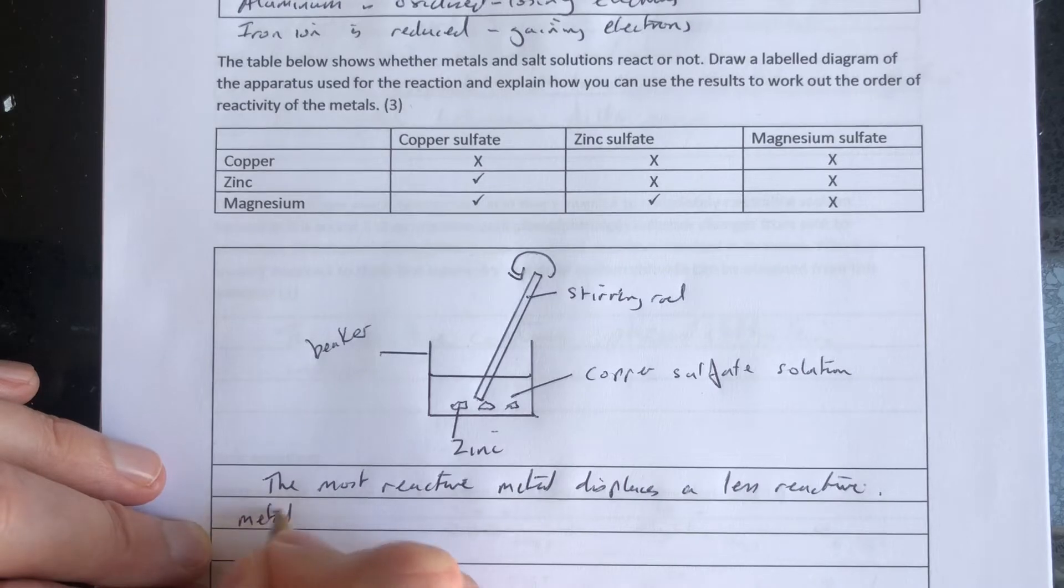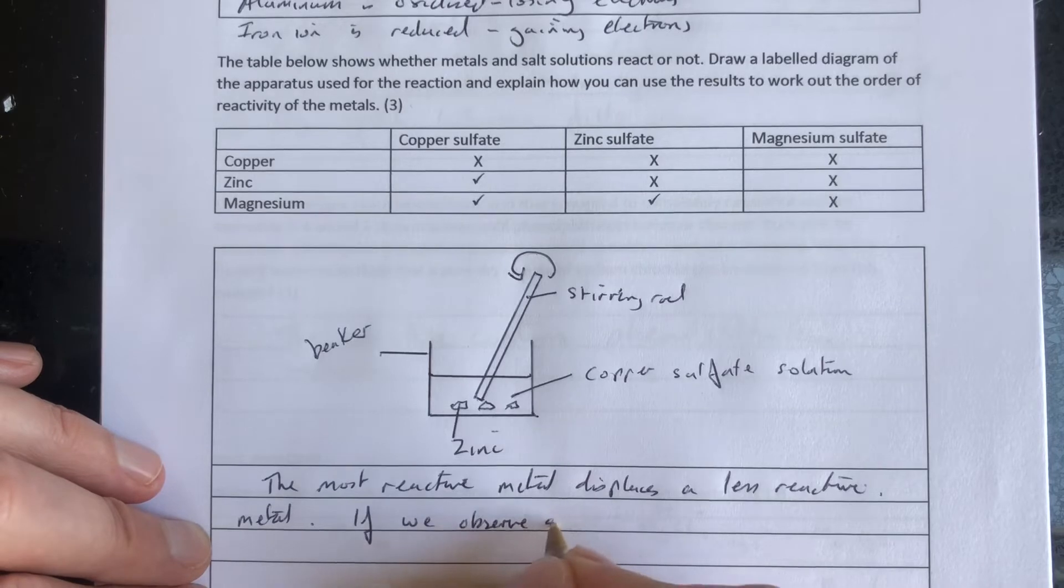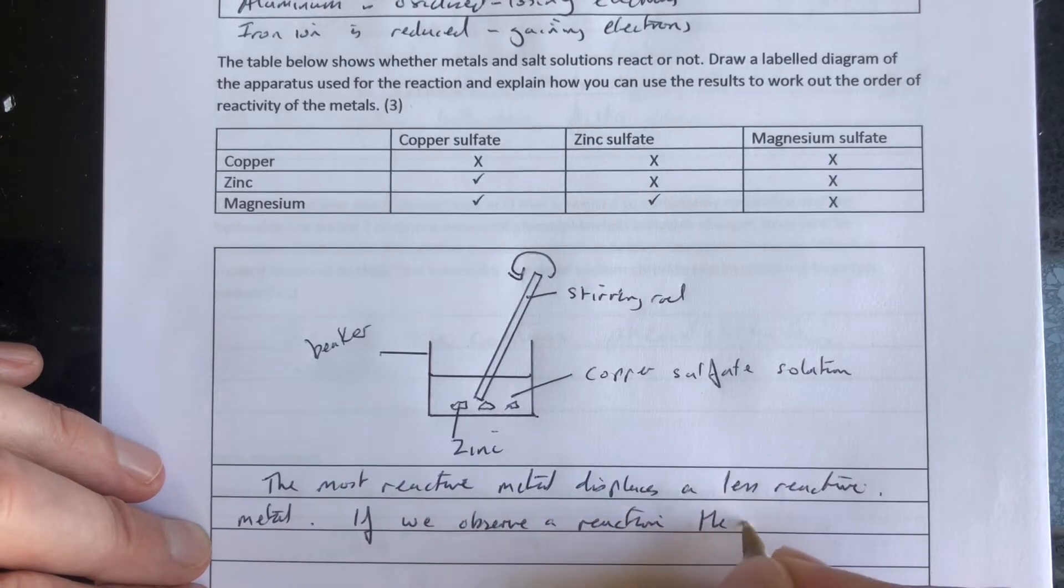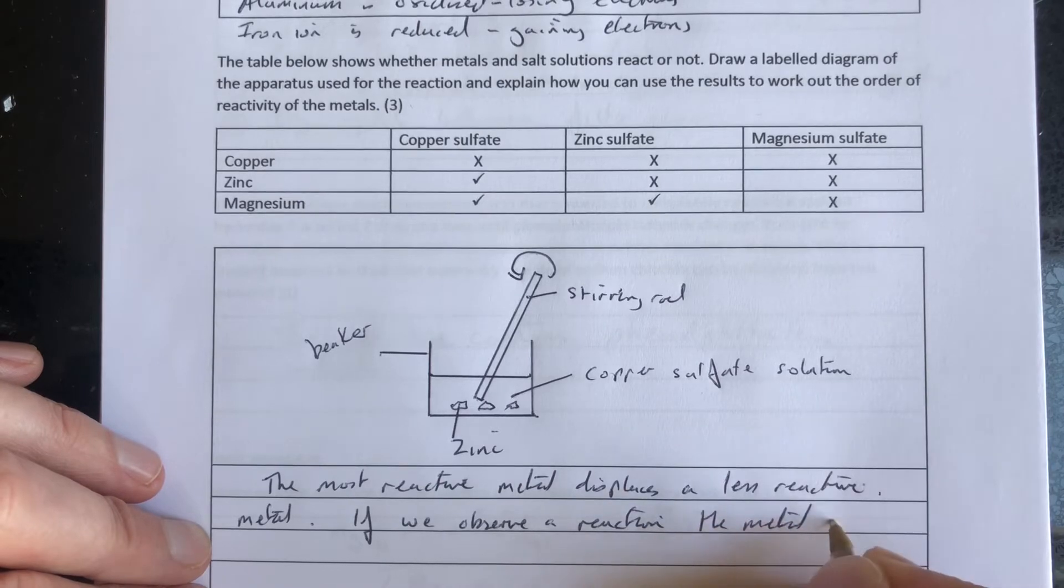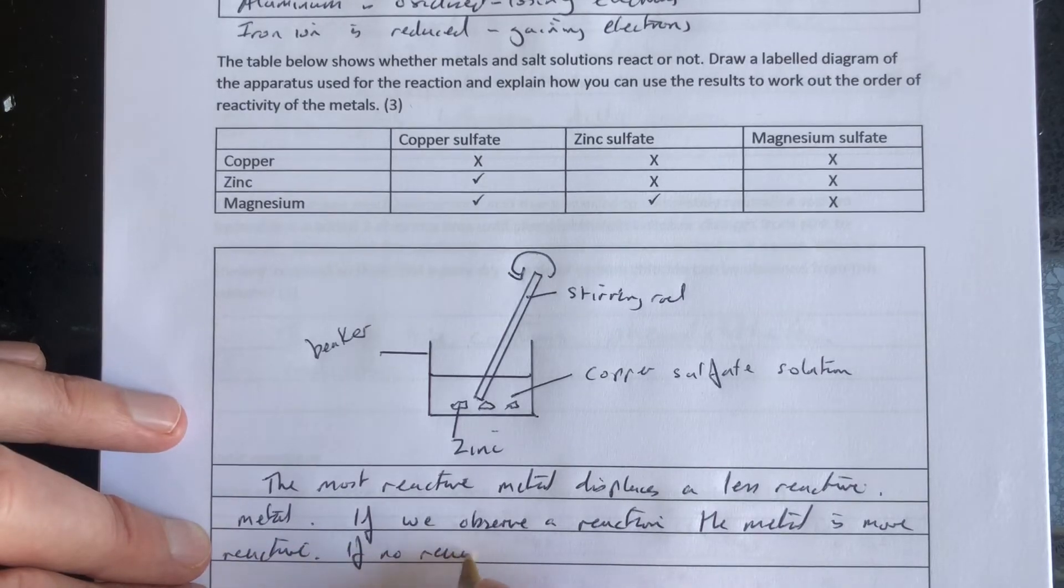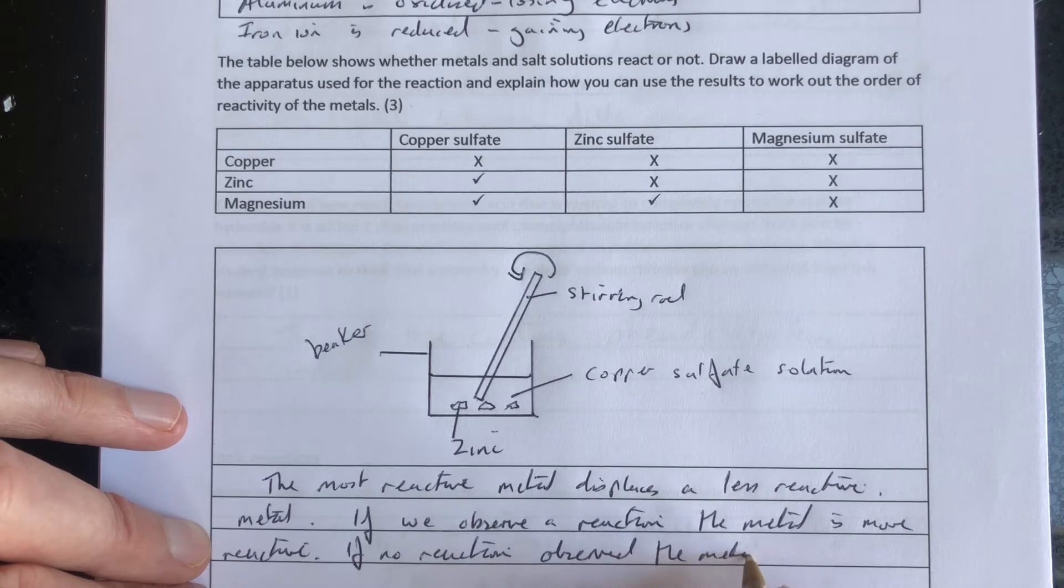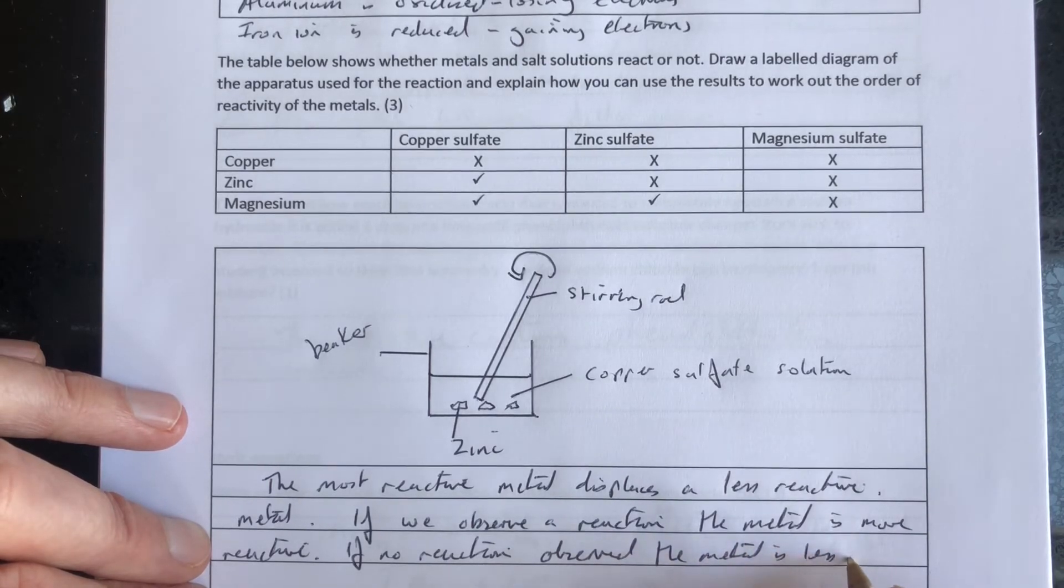Essentially, if we observe a reaction, the metal is more reactive. If no reaction is observed, the metal on its own is less reactive.